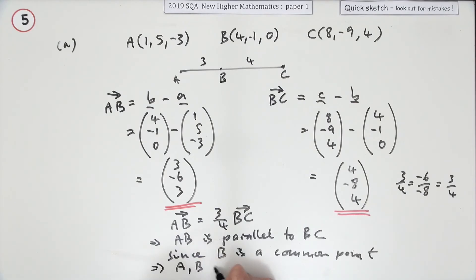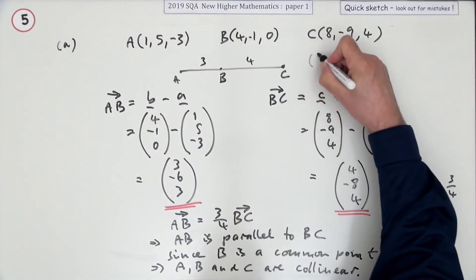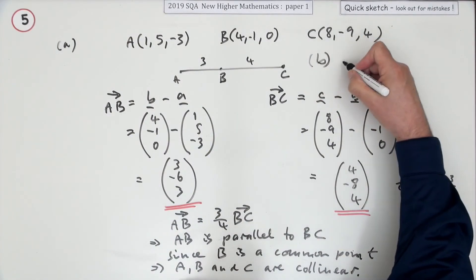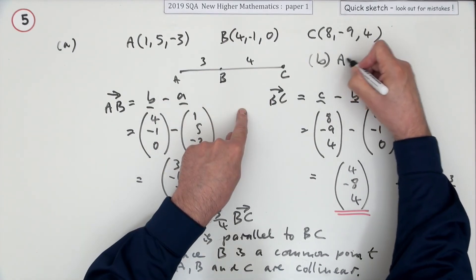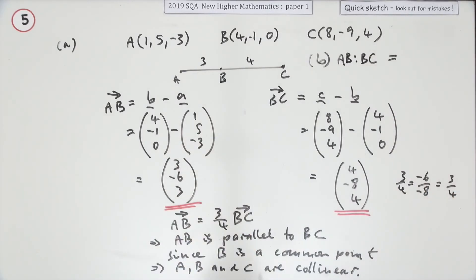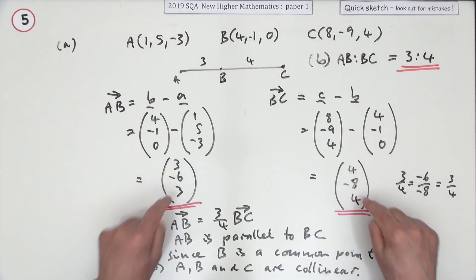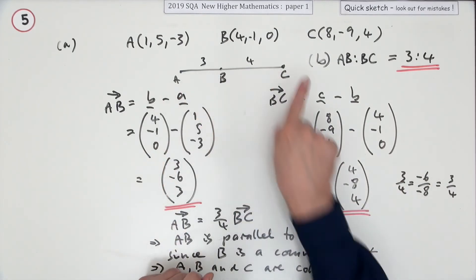Now for part B: state the ratio in which B divides AC. What's the ratio of AB to BC? Well, it's there - three to four. All of these should give the same steps: three steps, four steps.